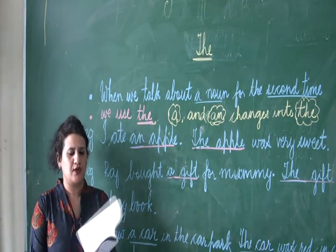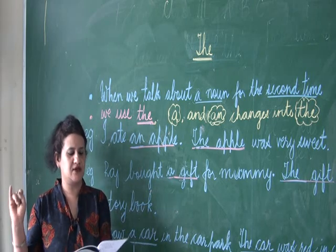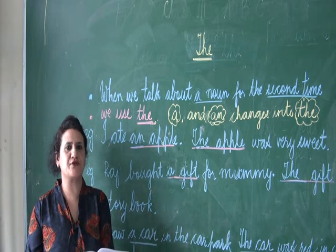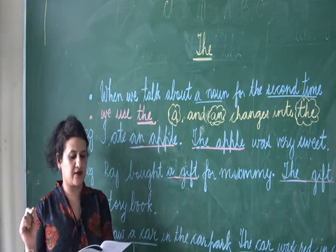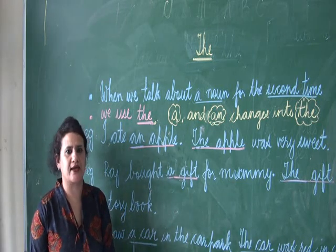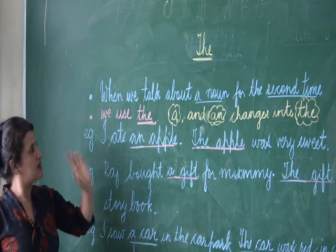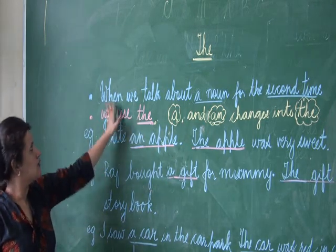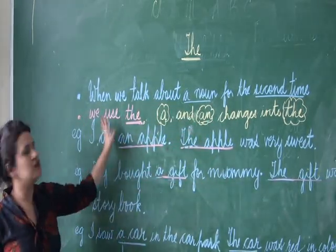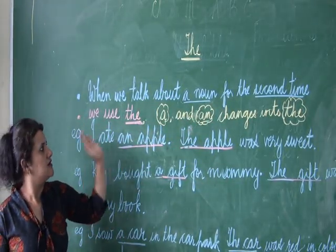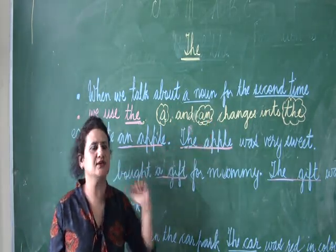So boys, I told you the uses of 'the'. The is used for oceans, for rivers, for famous buildings, and things that are only one of their kind. Same way, we are going to talk about 'the' when we talk about a noun for the second time — we use 'the'. A and an changes into 'the'.